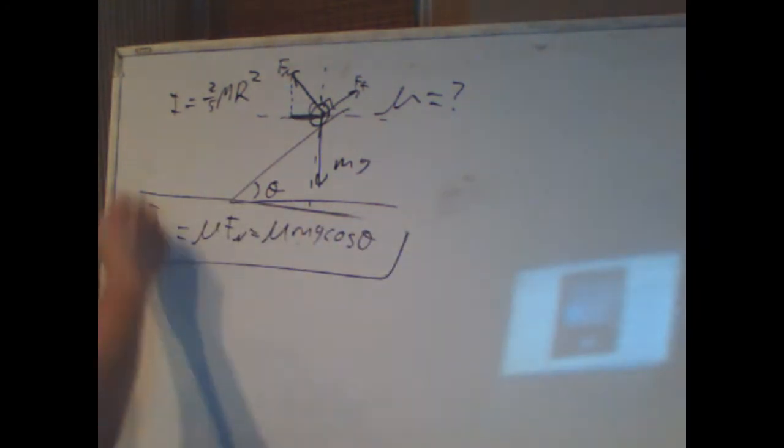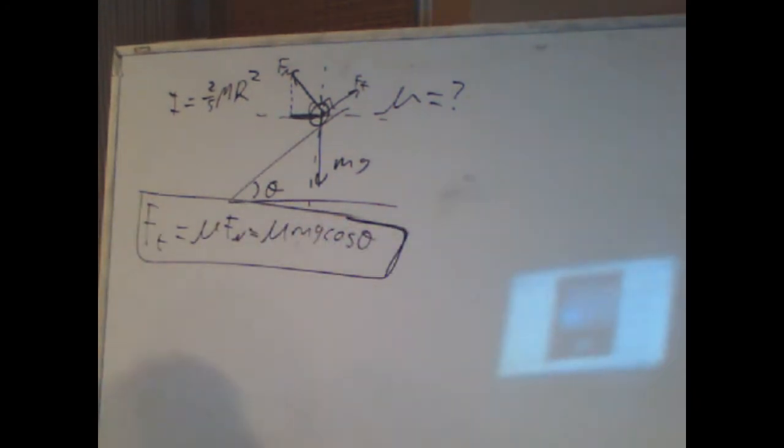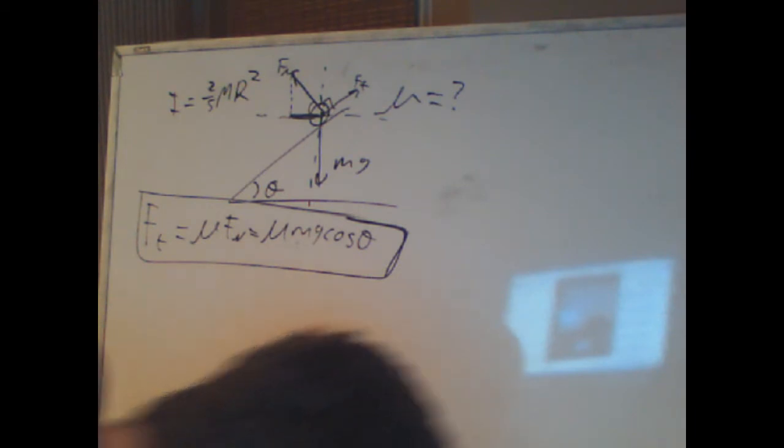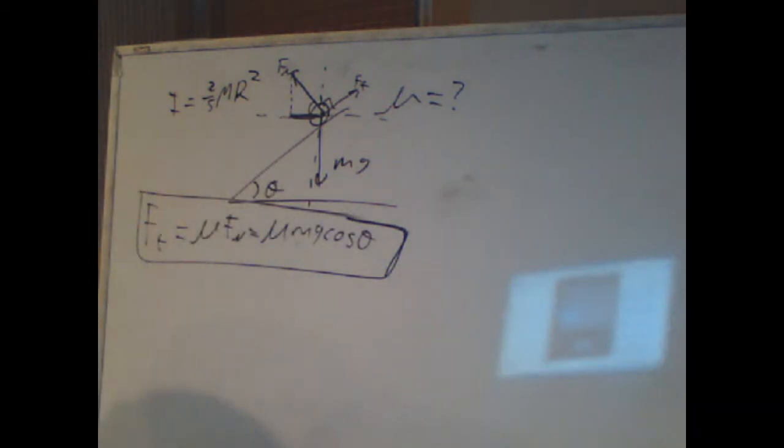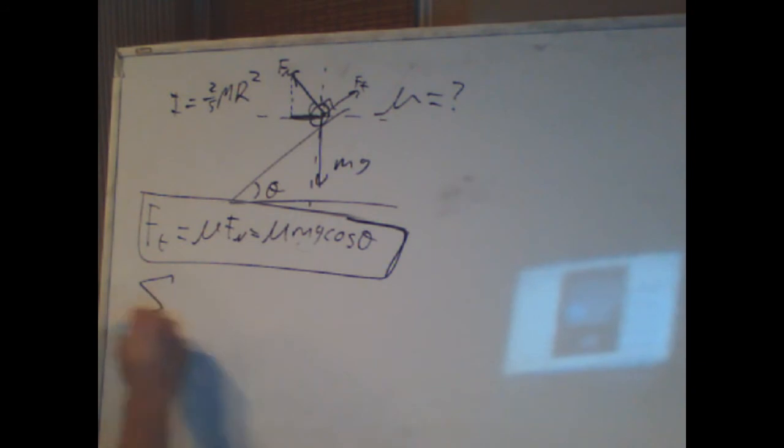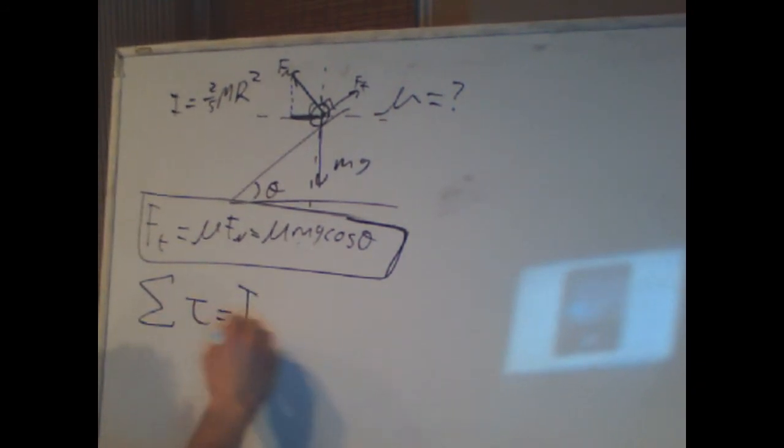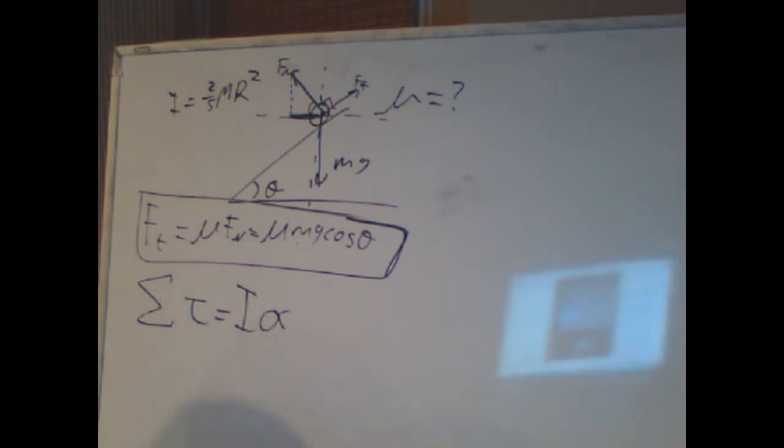Now that we have what this equals, the problem we are posed with is how to find that in terms we know. We know theta, we know mg. Actually, we don't know m. We just know the moment of inertia. And here lies a problem. We have a variable they don't give us. So now we have to resort to a different tool.